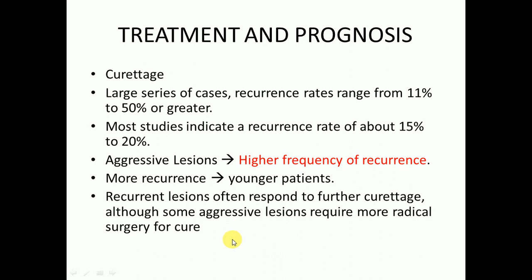Regarding treatment and prognosis, if the lesion is smaller, we can proceed with curettage. In larger series of cases, recurrence rates range from 11% to 50% or greater, with most studies indicating a recurrence rate of about 15% to 20%. Non-aggressive lesions have less chance of recurrence compared to aggressive ones, and younger patients have more chances of recurrence. Recurrent lesions often respond to further curettage. Although some aggressive lesions require more radical surgery for cure.